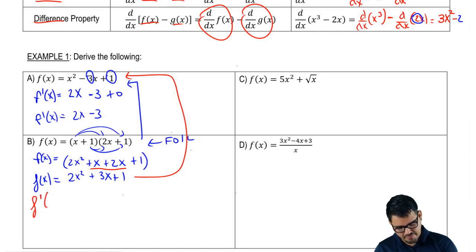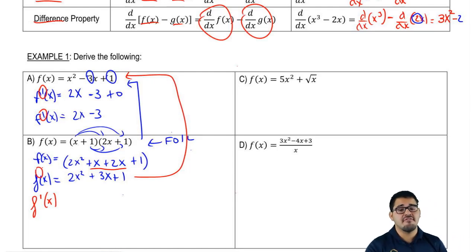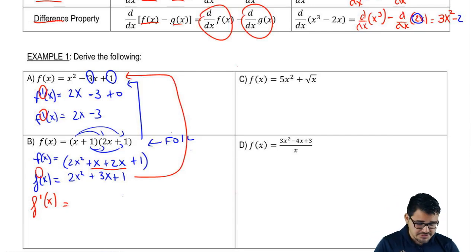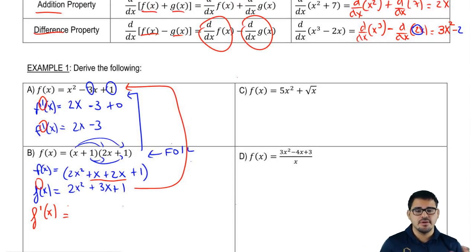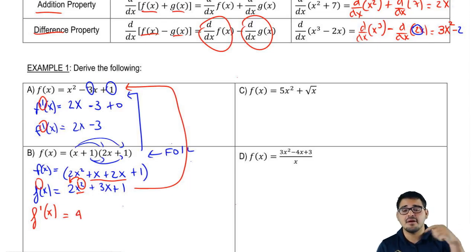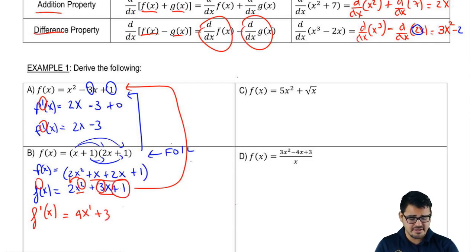Now finding the derivative: f'(x). The derivative of 2x² — I multiply 2 times 2 to bring down the power, giving 4x. Then the derivative of 3x by the coefficient rule is plus 3. The derivative of 1 is 0. So f'(x) = 4x + 3, and we're done. That was the foiling technique we needed to recognize to do this problem.